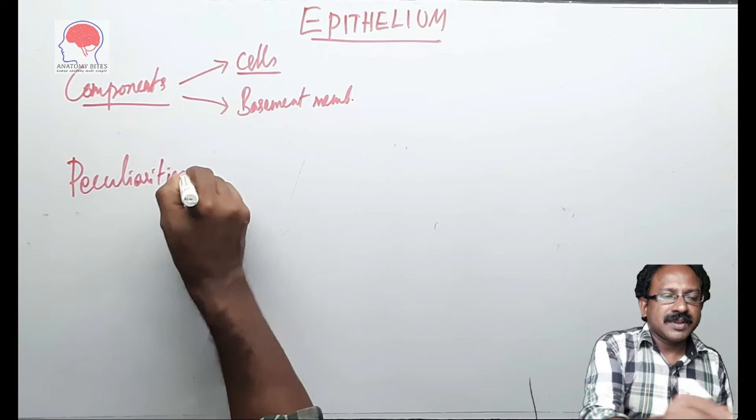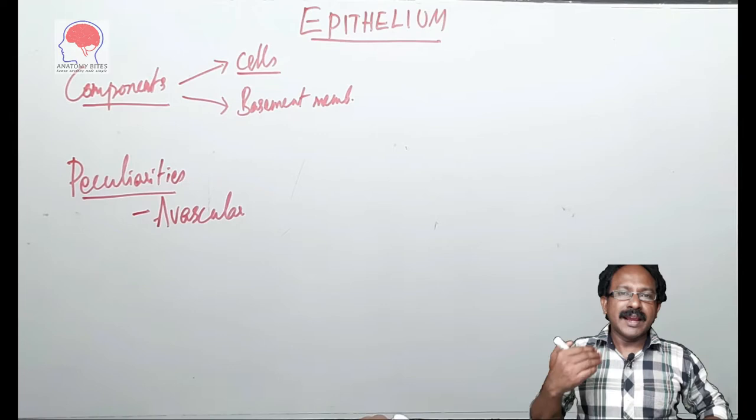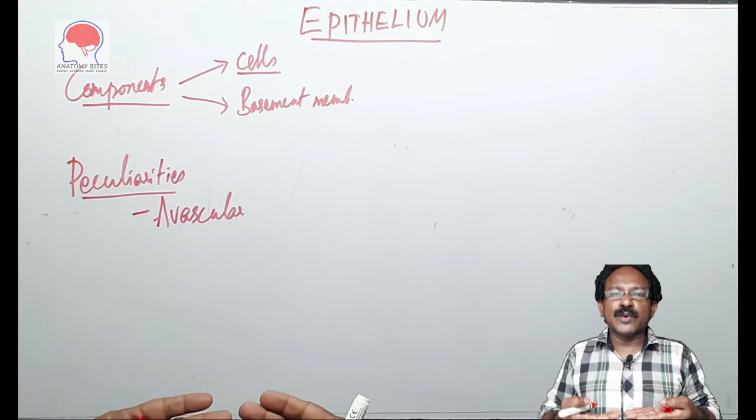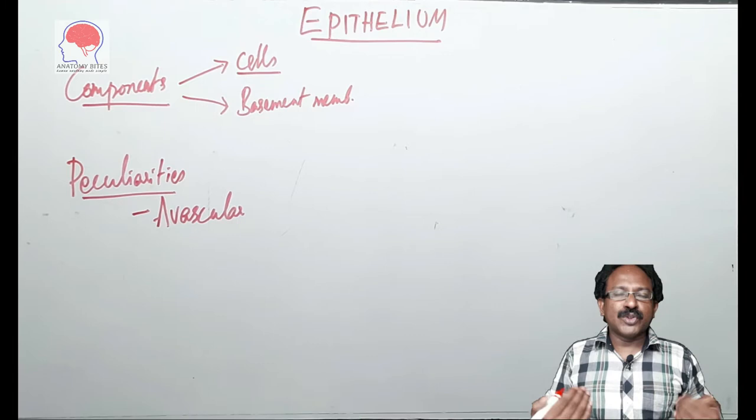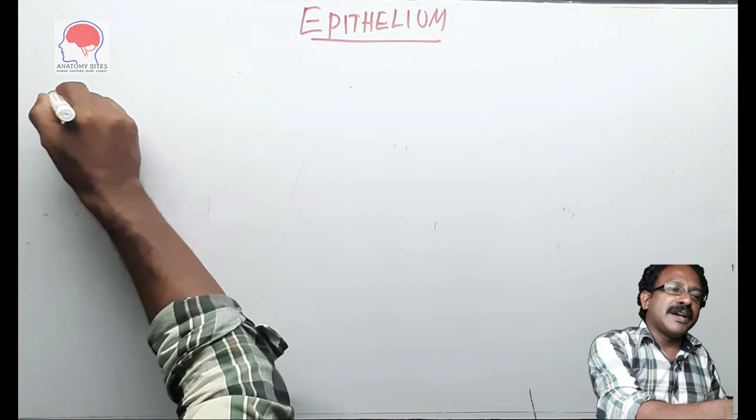The peculiarities of all the epithelium is that they are avascular in nature. That means there is no blood vessel running into the epithelium. Then how does this epithelial cells get their nourishment? It is simply through diffusion through the basement membrane to the deepest layer of the cell. If it is a multi-layered epithelium, this diffusion continues to the most superficial layer of the epithelium. So all the epithelium are devoid of blood vessels. There may be nerves running between the epithelial cells.